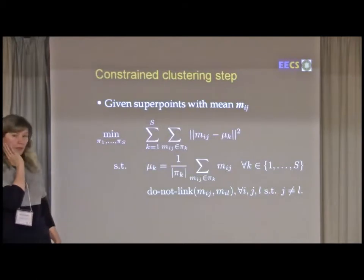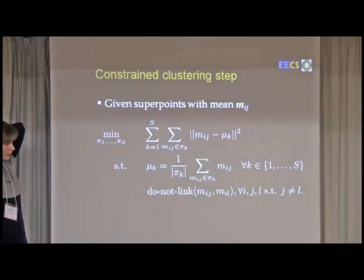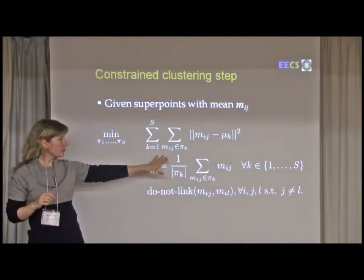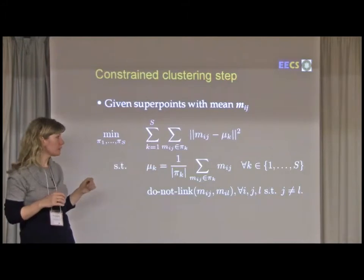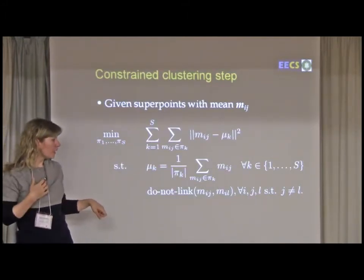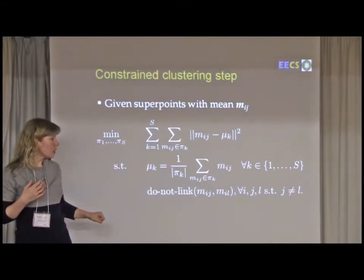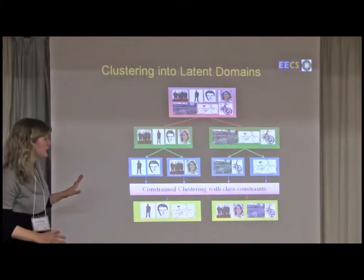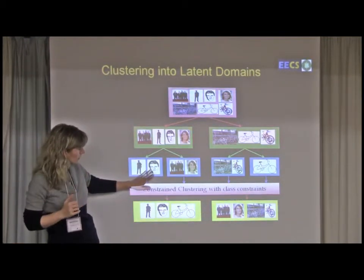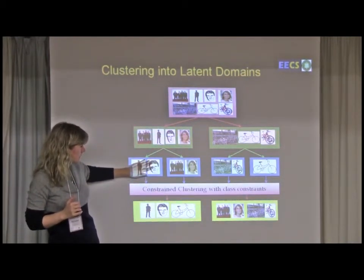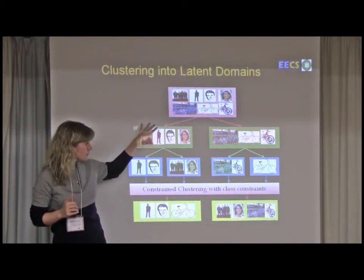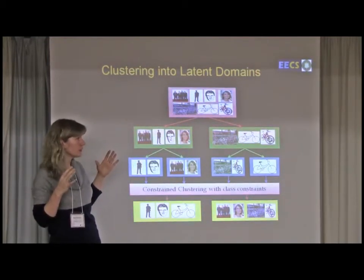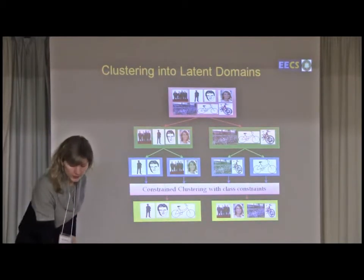For the constraint clustering step, given the super points, each of which has a mean, we want to minimize this objective function where we're minimizing essentially the k-means objective function for these super points, but with do not link constraints. The constraints basically say that we don't want to link two super points if they come from the same category. We don't want to put this cluster together with this cluster because they come from the same category, because we want these super points to go to different domains. So essentially we're trying to constrain this to not cluster along categories.